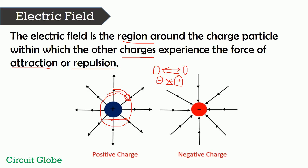The force of repulsion or attraction between charges happens because of the electric field. Some kind of force is present around a charge, and if you place any other charge in that field, it experiences attraction or repulsion. The force induced by the magnitude of the unit charge is called the electric field. It is represented by imaginary lines and by the symbol capital E. The unit of the electric field is Newton per coulomb, which is equal to volt per meter.